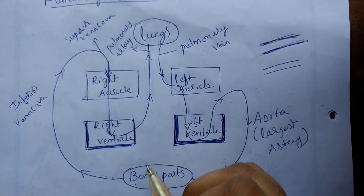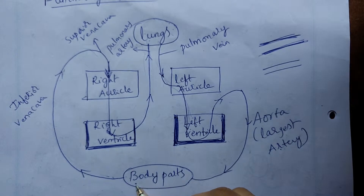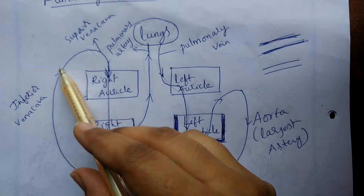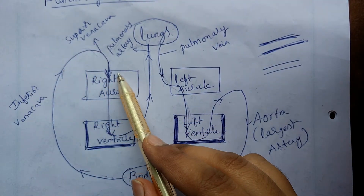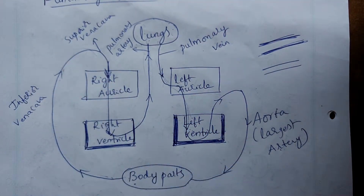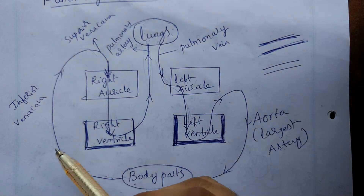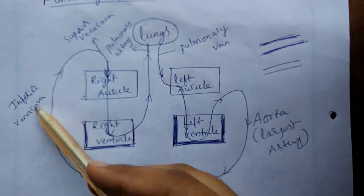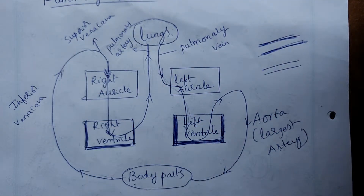First of all, the body has impure blood. That impure blood goes to the vena cava, and then to the right auricle. The vena cava is of two types: inferior and superior.